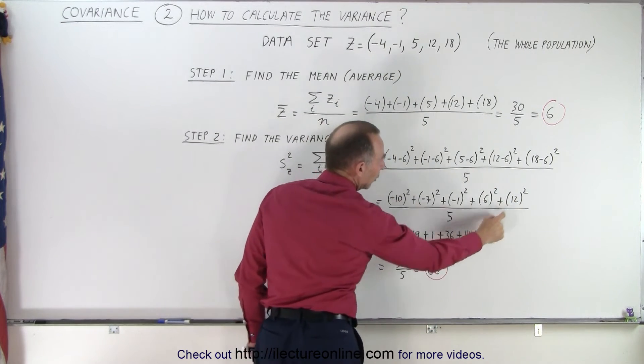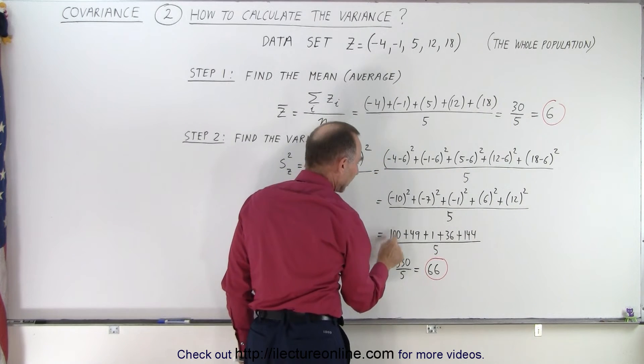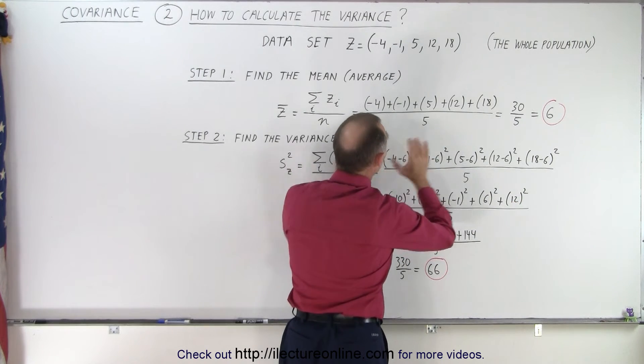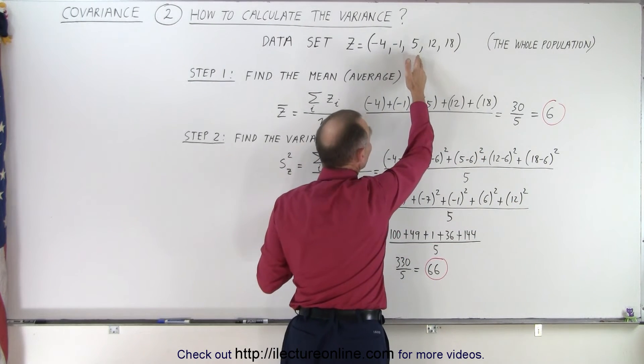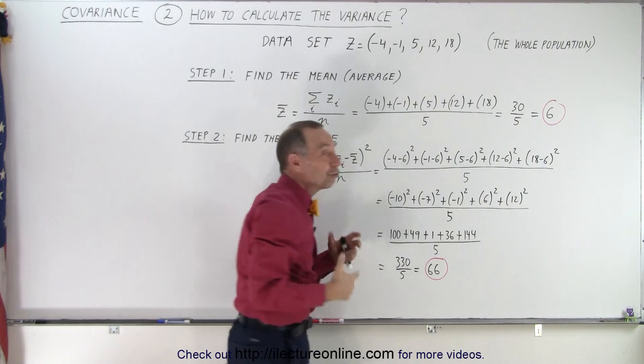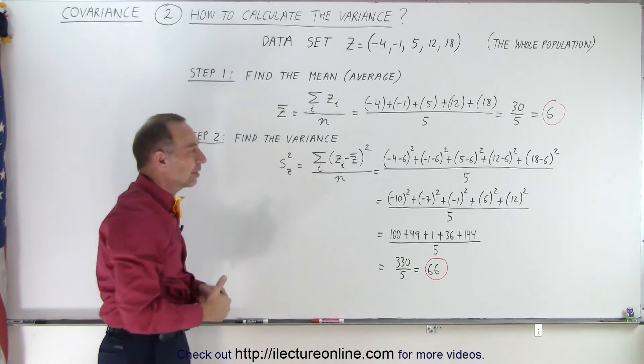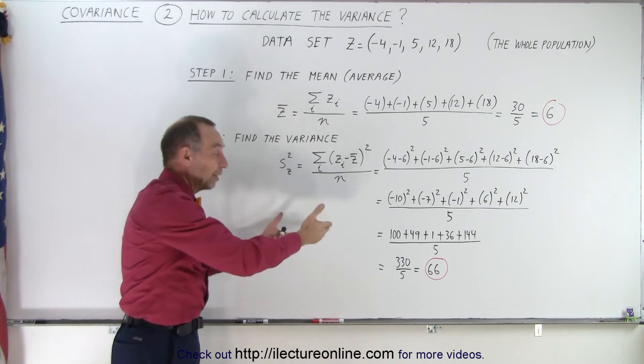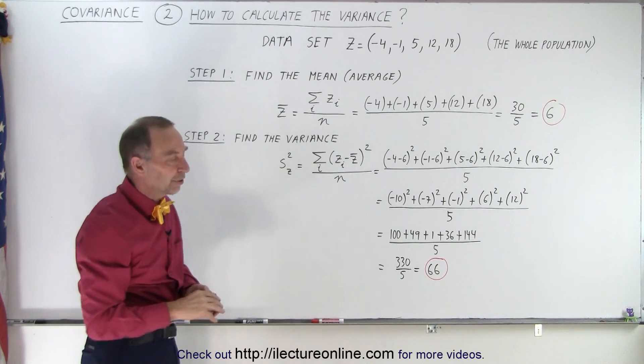Notice that here 12 squared is 144, negative 10 squared is 100. So those two numbers right there, since they're so far from the average number of six, you can see that they contribute a lot to the variance calculation. And that's why those two numbers cause you to have a larger variance than what we found in the previous video.